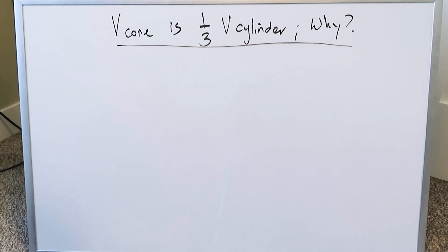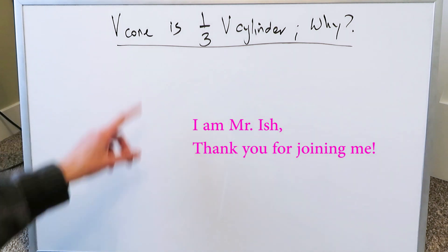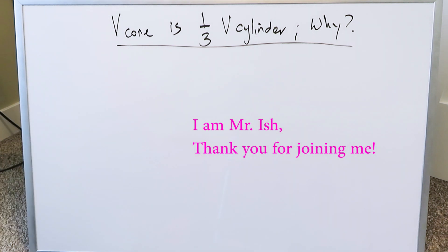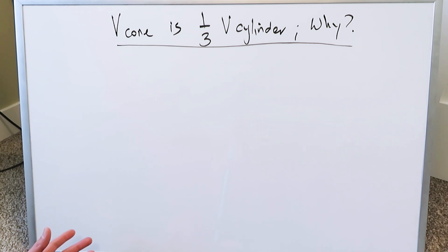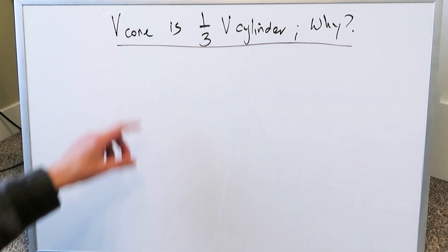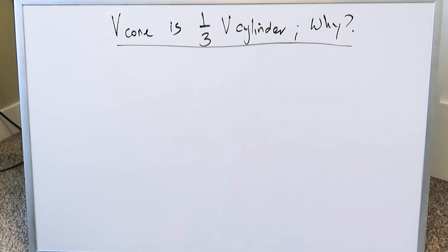We have a very nice and useful video here. The volume of a cone is one-third the volume of a cylinder. We have to explain that to be the case. Assuming they have the same radius and the same height dimension, the volume of the cone will always be one-third that of the cylinder.